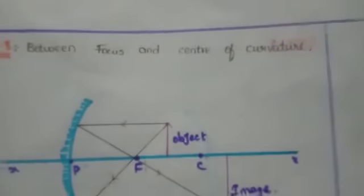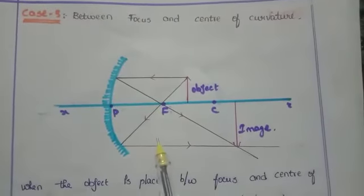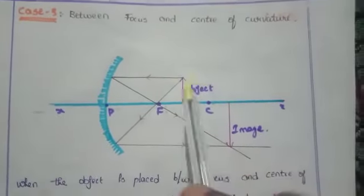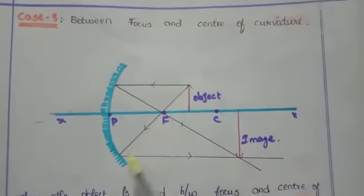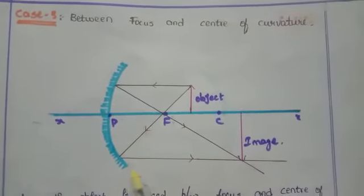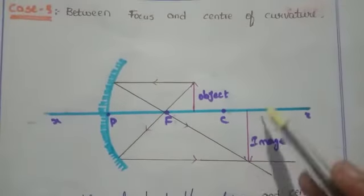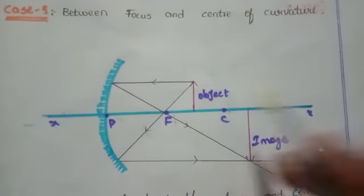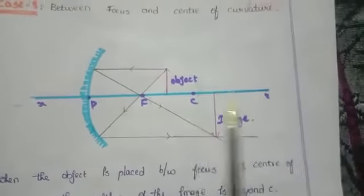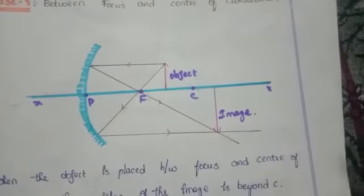See here, it is case 3: when the object is placed between focus and center of curvature. See here, it is the ray diagram of concave mirror case 3. The ray will be parallel to the principal axis and pass through the focus, and another ray passes through the pole and through the focus parallel to the principal axis. Here the image will form beyond the center of curvature. The object is small and the image is big. When the object is placed between focus and center of curvature, the position of image is beyond C. The size of the image is enlarged. It is an inverted and real image.